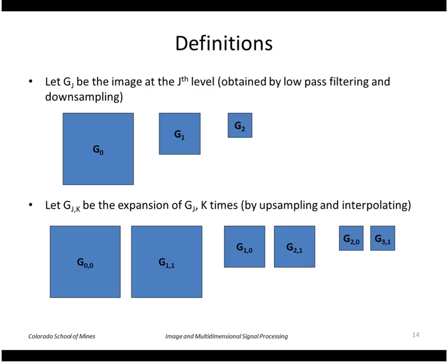And then let's say that G sub J K is the expansion of G sub J by K times. So if we take the original G0 and expand it once, that gives me, well I'm sorry, take the original, take the G1 and expand it once. That gives us back to the same size as the original. Take G2 and expand it once and that gets us to the size of G1 and so forth.